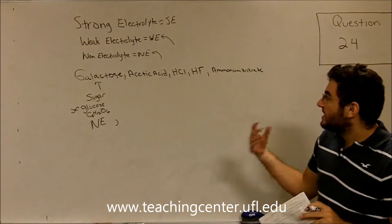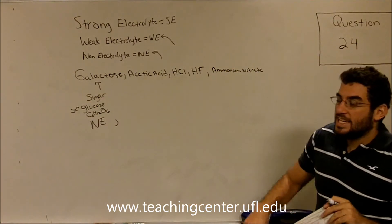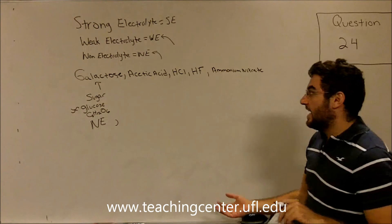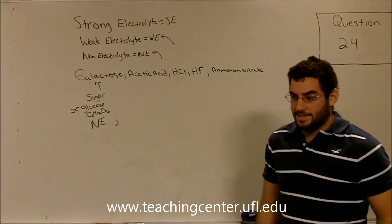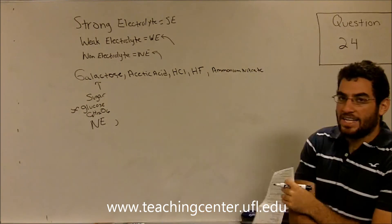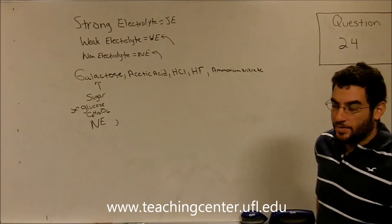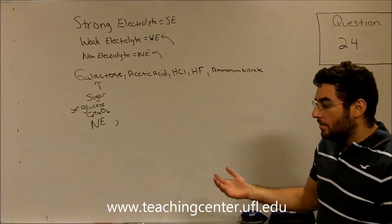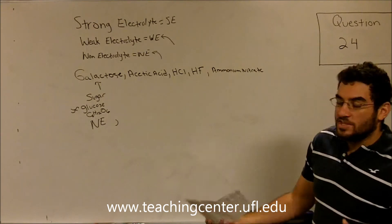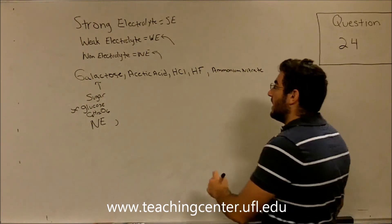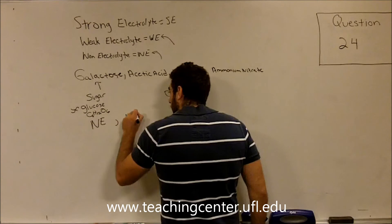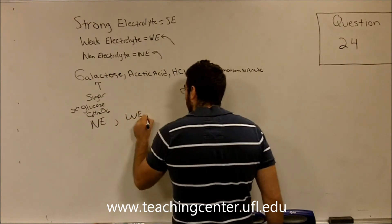Now we go on to acetic acid. Acetic acid is not a strong acid. It's an acetate ion in acid. We know that acetate is one of our polyatomic ions, and when it's mixed into an aqueous solution, it breaks up, but it doesn't dissolve completely. So we already classified one of those as a weak electrolyte.